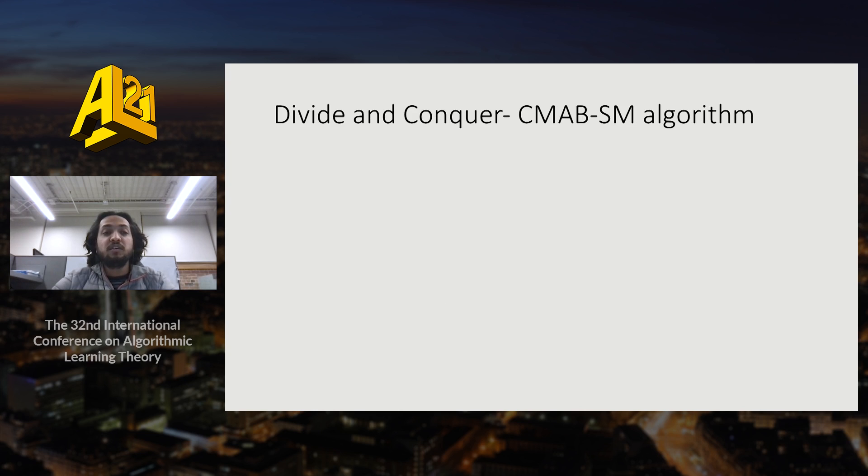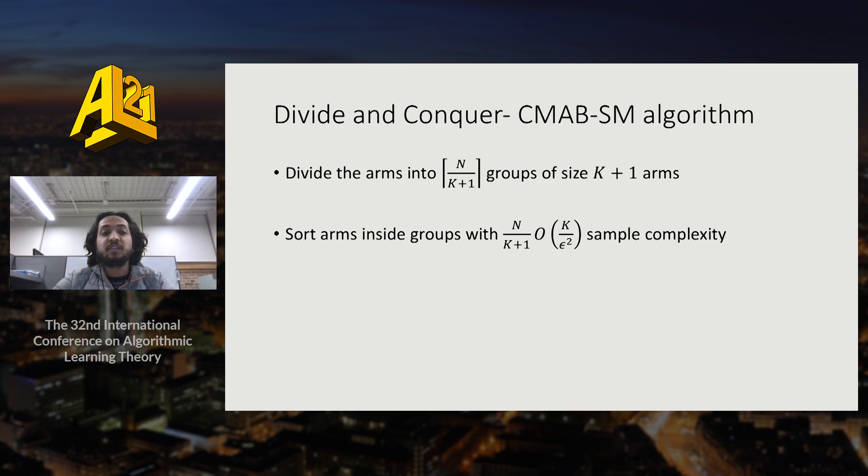Step 1 is to divide N arms into groups of size K plus 1. To this end, we propose the divide and conquer CMAB-SM algorithm which works on this division. We divide arms into groups of size K plus 1 arms. We sort the arms inside each group with total of order N by epsilon-square sample complexity. Then we keep on merging two groups to construct a new group of K arms. This again requires order N by epsilon-square sample complexity.